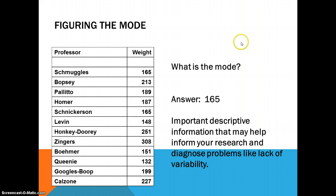And simply figuring the mode is simply the most commonly occurring number. And you will notice here that the number 165 occurs twice. And in that case, since no other number occurs twice, that would be the mode.